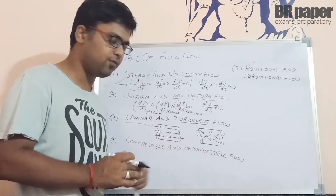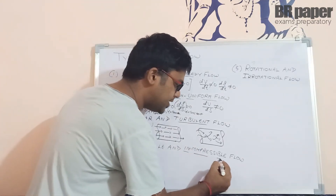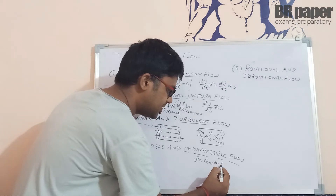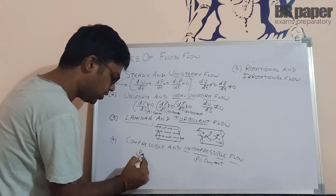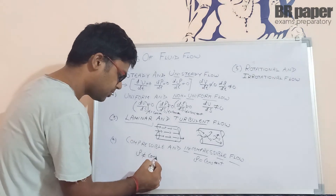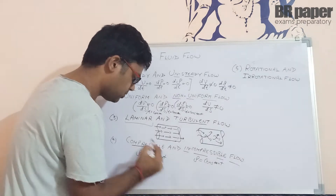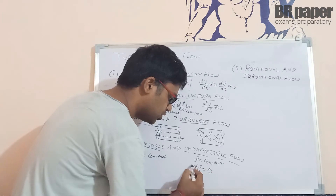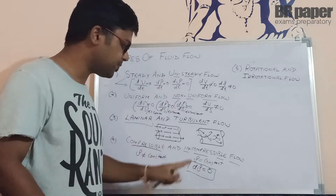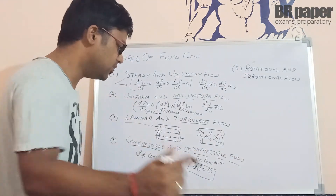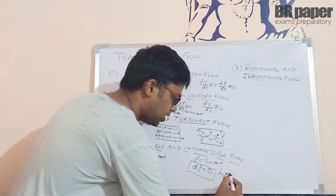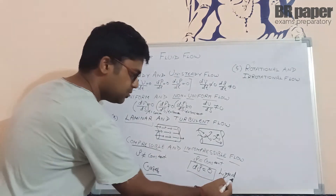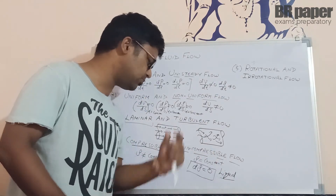The fourth type is compressible and incompressible flow. If the fluid is flowing and the density remains constant, it is incompressible fluid flow. If the density is not constant, we call it compressible fluid flow. For incompressible flow, dρ = 0, meaning density remains constant with no change. Generally, all liquids are incompressible and all gases are compressible — that is the main difference between liquids and gases.